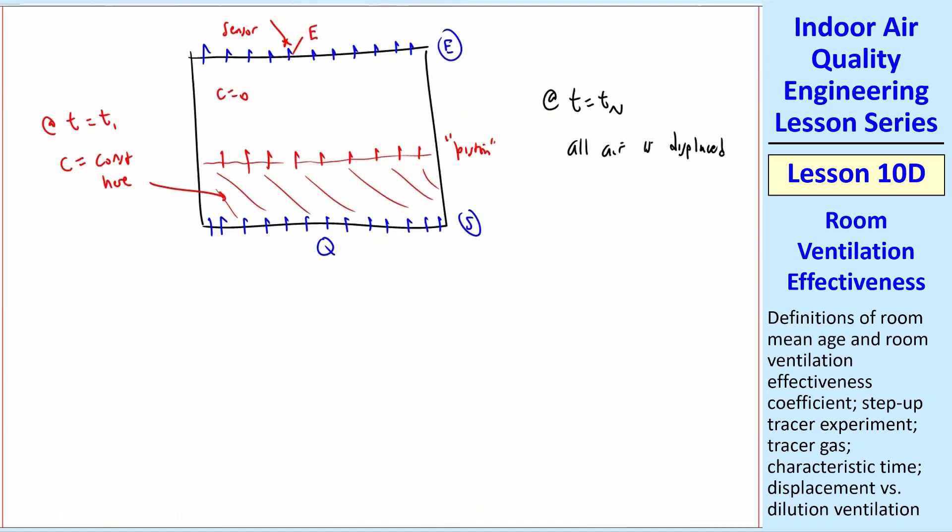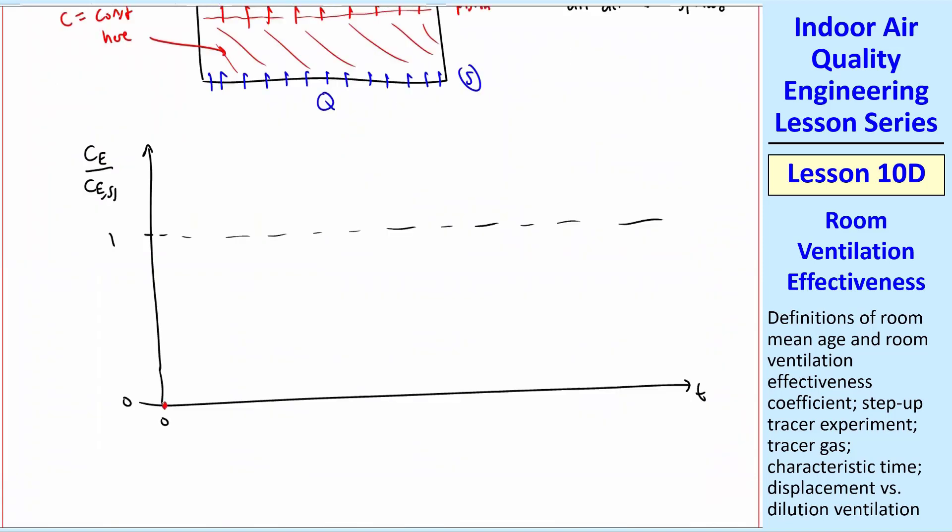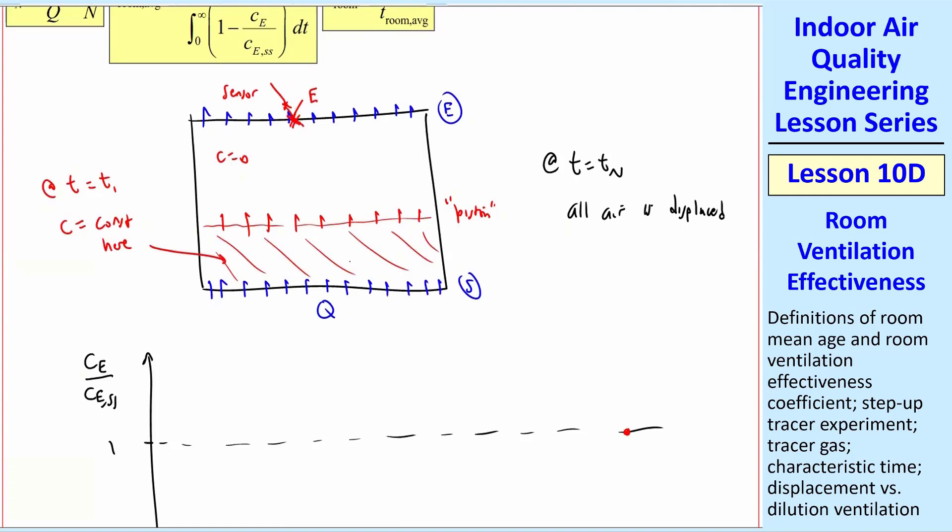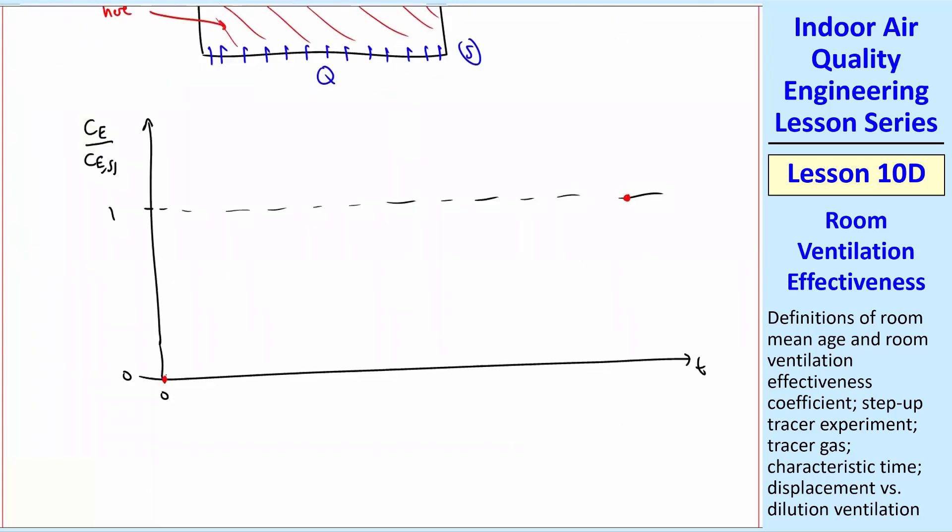So it takes time TN for this air to move all the way up to be exhausted. What does this look like in terms of our plot? We know we're going to start at 0. Suppose you're sitting at this sensor. How long does it take for this to sense anything? It's going to sense C equals 0 until this piston, this interface, reaches the top. That's going to take time TN. So we can easily plot this. C is 0 until we reach this magic time TN. And then suddenly it'll be a step function. Just jump right up to 1 and then be 1 from then on to infinity if you keep injecting that contaminant into the room.